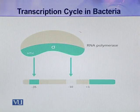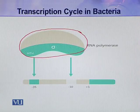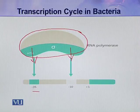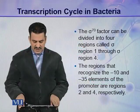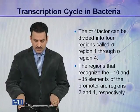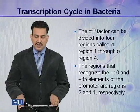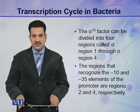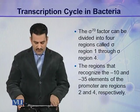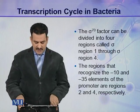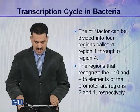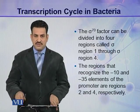The RNA polymerase binds to the DNA at the minus 35 and minus 10 sequences. The sigma 70 factor can be divided into four regions: sigma region 1, sigma region 2, sigma region 3, and sigma region 4. The regions that recognize the minus 10 and minus 35 elements of the promoter are regions 2 and 4 respectively.